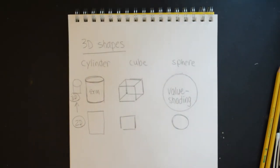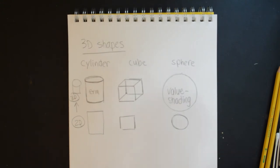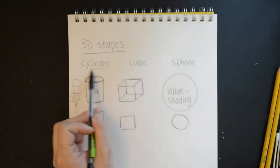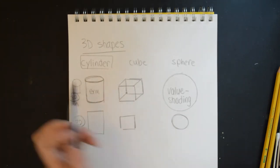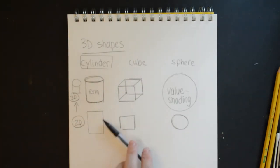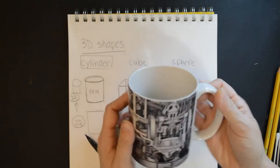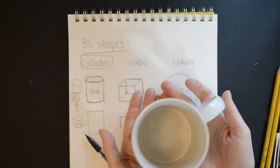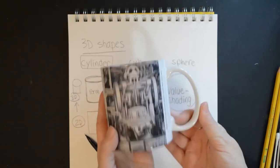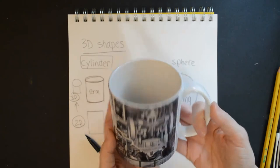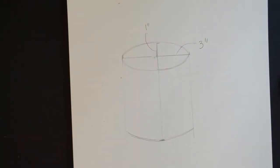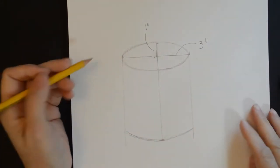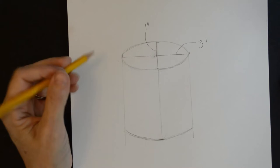Hopefully you sketched out some of these basic shapes. We're going to start with the cylinder for the beginning of our lesson, and with the cylinder we're going to think about drawing a mug — a basic mug, whether it's for hot chocolate or coffee. Let's go ahead and get started.